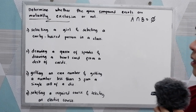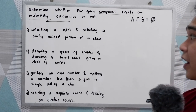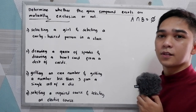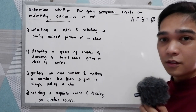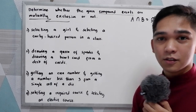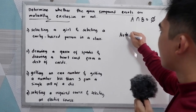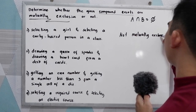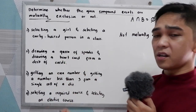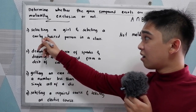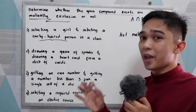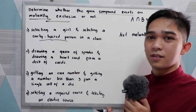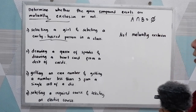Number one: selecting a girl and selecting a curly-haired person in a class — mutually exclusive or not? The answer is not mutually exclusive. Why? Because that girl can also be a curly-haired person. So if that's the case, there is a common element — she's a girl and also curly-haired. That's why it is not mutually exclusive.